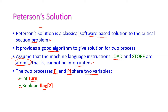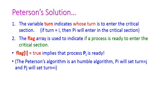The first variable 'turn' is used to indicate whose turn it is to enter the critical section. If the turn value is i, then processor pi will enter the critical section. If the turn value is j, then processor pj will enter the critical section. So for this purpose the turn variable is used.